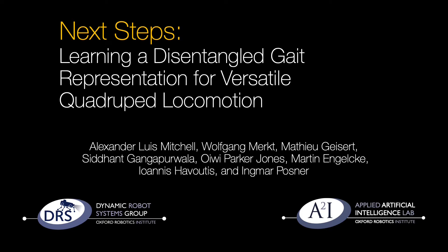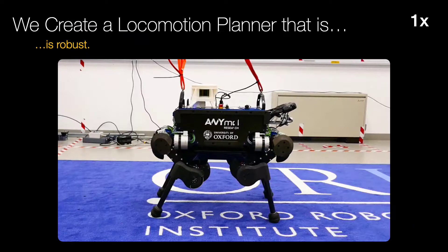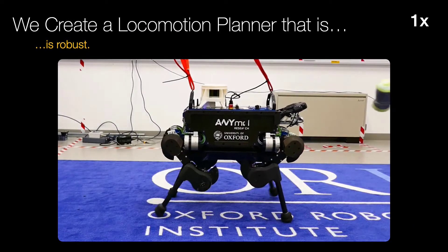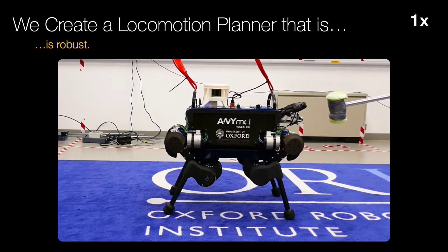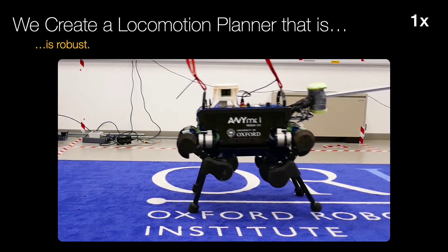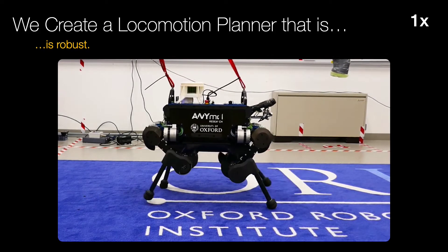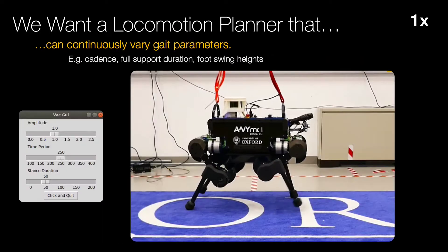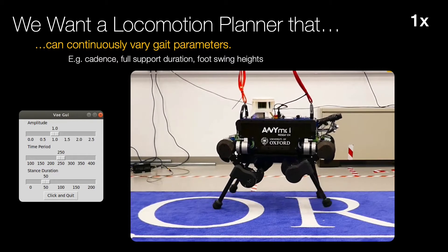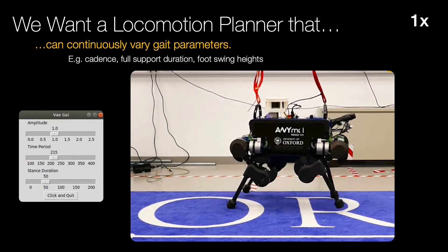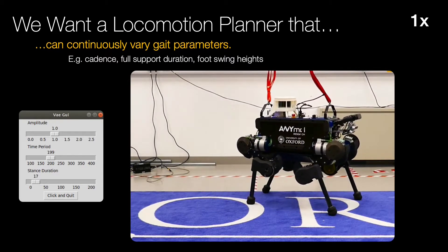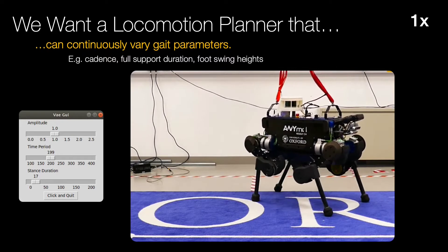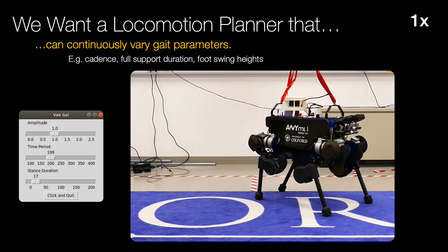Welcome to Next Steps. We present a locomotion planning approach with the following key features. Firstly, an approach which is robust to external disturbances. Secondly, an approach which can vary key gait parameters on the fly. These include the number of footsteps per minute, the duration the robot has four feet in contact, and the swing height.